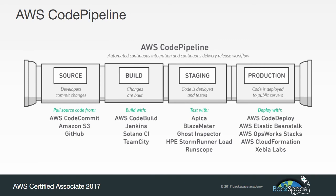The real heart of this CICD process is going to be the AWS CodePipeline, and that will provide the link — the pipeline — between our developers and our production environment, making sure that all of the checks and balances occur in between.